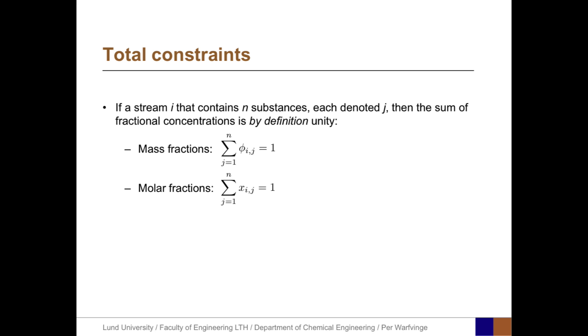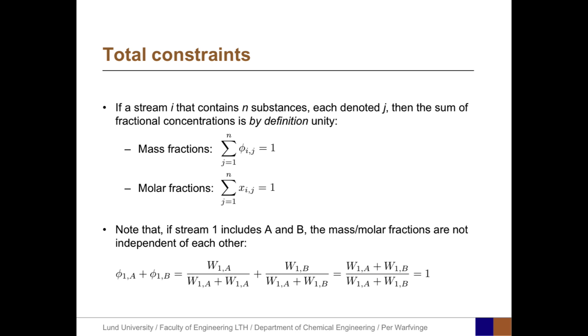Or, more simply, if we add up the mass fractions for a certain stream, the sum must be 1, and the same thing goes for the molar fractions. And we should also know that if stream 1 includes A and B, the mass or molar fractions are not independent of each other. The sum of them must always be 1.